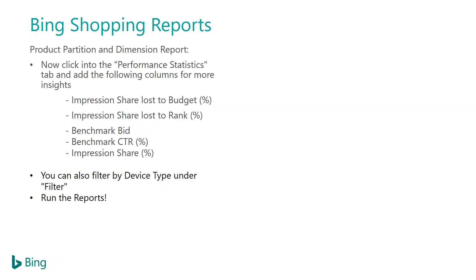For the partition and dimension reports, there are five new additional attributes under performance statistics: impression share loss to budget, impression share loss to rank, benchmark bid, benchmark CTR, and impression share. We highly recommend implementing these performance statistic attributes so you can optimize further.